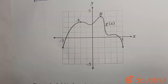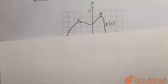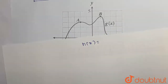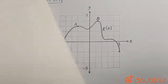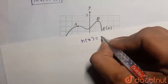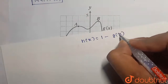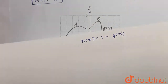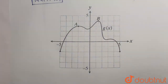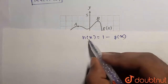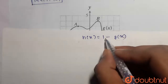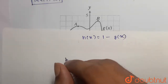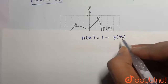For the first option, we need to find out what is the range of h(x). Now h(x) is equal to minus g(x) plus 1, which is the same as 1 minus g(x). For finding the range, we need to find out the maximum and minimum value of g(x). The maximum value of h(x) will be when g(x) attains its minimum value, because g(x) is with a negative sign. So g(x) and h(x) will be inversely proportional.